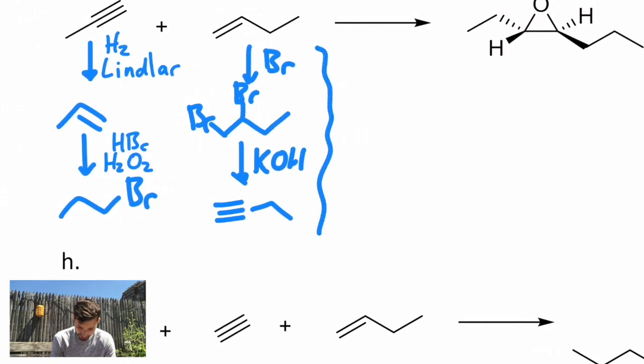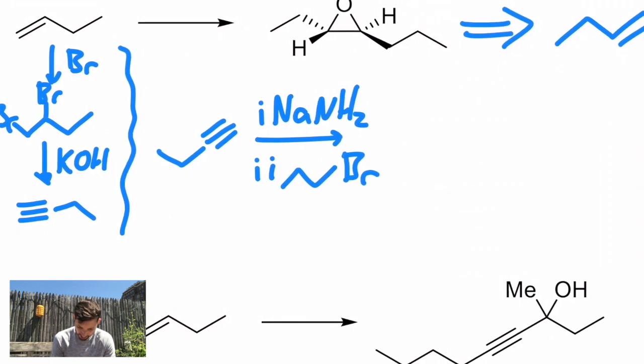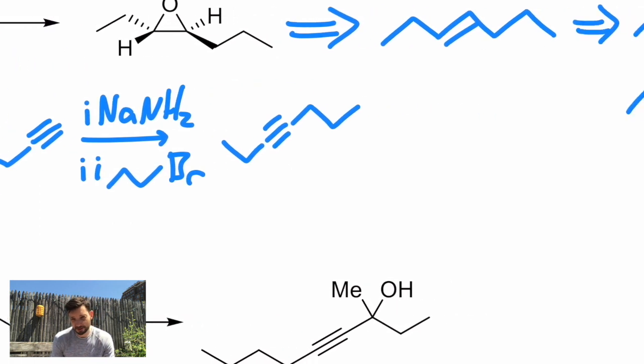Now let me rewrite that alkyne and show the steps. Number one, strong base, NaNH2. Number two, that bromide that we just showed how to make. That'll give me a seven carbon chain with an alkyne right where I want it. And right up above, I can see the retrosynthesis in front of me, what I'm trying to get to, the trans alkene.